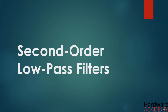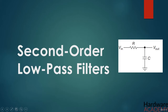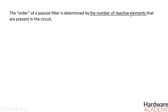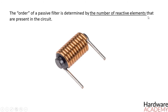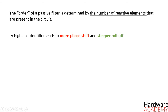Until now, we have assumed that an RC low-pass filter consists of one resistor and one capacitor. This configuration is called a first-order filter. The order of a passive filter is determined by the number of reactive elements — like capacitors or inductors — present in the circuit. A higher-order filter has more reactive elements, which leads to more phase shift and steeper roll-off. This steeper roll-off is the primary motivation for increasing the order of a filter.